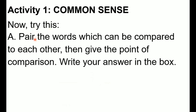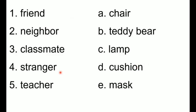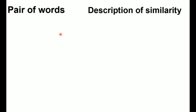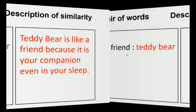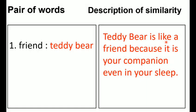Try this: pair the words which can be compared to each other, then identify the point of comparison and write your answer in the box. On the left side you have a pair of words, and on the right side is the description of similarity. First, 'friend' is being compared to 'teddy bear.'